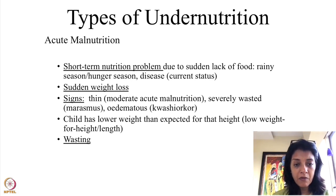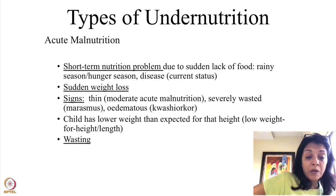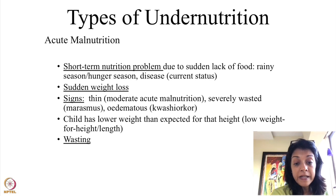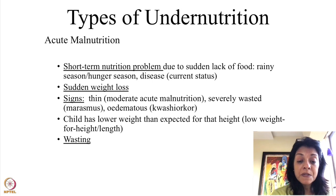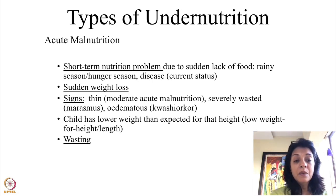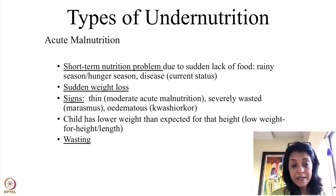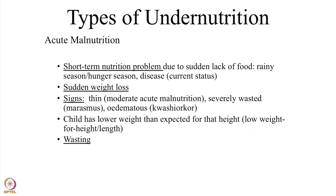Acute malnutrition is a short-term nutrition problem, primarily type 2 micronutrient deficiency. It could be due to sudden lack of food — in the rainy season, famine, or emergencies — causing sudden weight loss and wasting or edema. We used to call this marasmus or kwashiorkor. Marasmus was described as calorie deficiency causing thin children; kwashiorkor was described as protein deficiency. Now we don't use those terms. In acute malnutrition, the child's weight decreases remarkably — lower than expected for that height — and the child is said to be wasted.